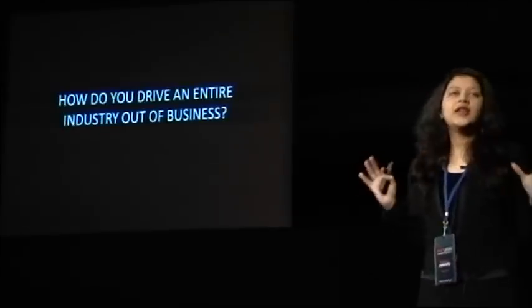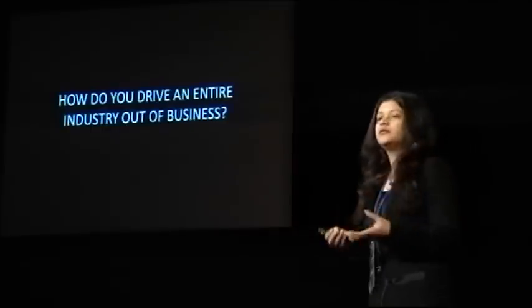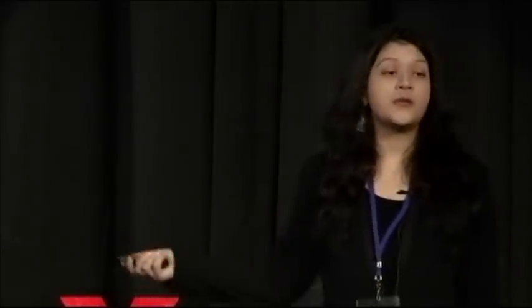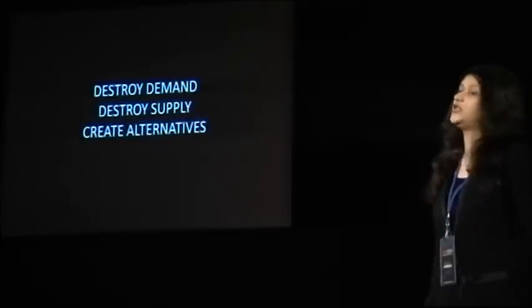So how do you drive an entire industry out of business? Think of any product — hybrid cars, cereal, toasters. Why do we have a toaster industry? Because people want toast, someone is making toasters, and there are no other good alternative options available. What have we established? There's demand, there's supply, and there is the absence of alternatives. So if you're going to put any industry out of business, it's very simple: you need to destroy demand, destroy supply, and create alternatives.